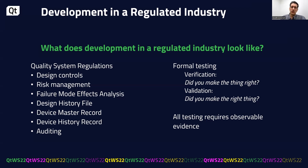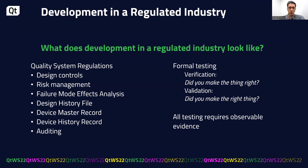The testing regime revolves around verification and validation. This is often phrased as: did you make the right thing versus did you make the thing right? Validation is our indication that the customer will see real clinical benefit. Verification is our assurance that we met our own requirements. All of this testing requires observable evidence — it must be unambiguous and verifiable by a third party. Think: the temperature monitor read 55 degrees Celsius, not the system was hot.